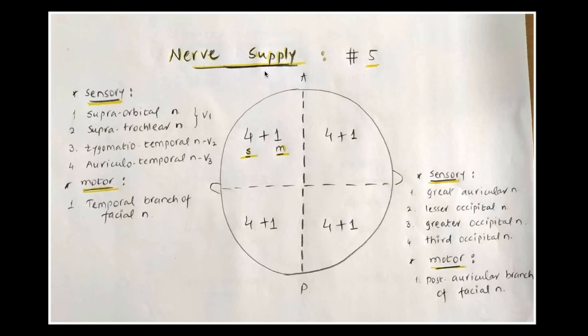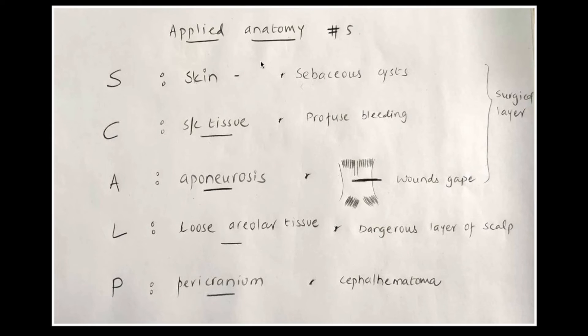The one motor nerve in each posterior quadrant is the posterior auricular branch of the facial nerve. Likewise, you can remember the rule of five to know the nerve supply of the scalp. Next comes applied anatomy — again the rule of five applies.